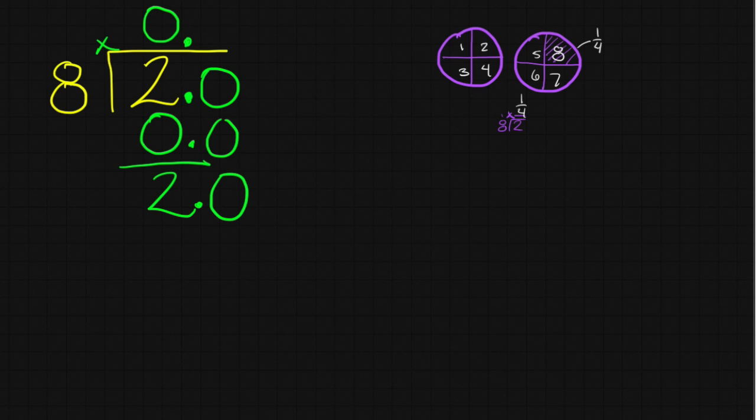All right, so now I'm going to be working in the tenths place. How many groups of eight come out of 20? And the answer is, well, two. Two times eight is 16. And dang, I still have a remainder.